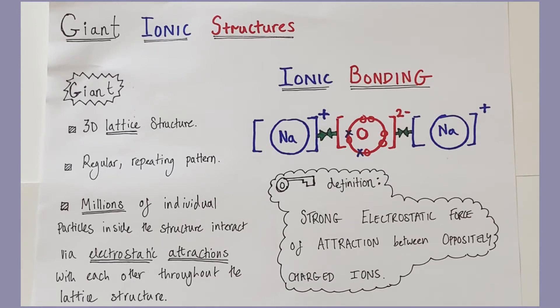Now, if we're talking about a giant ionic structure or an ionic compound, there will be not just one or two, but millions or even billions of these strong attractions taking place within the structure itself. And that will help to explain some of the key properties of giant ionic structures.